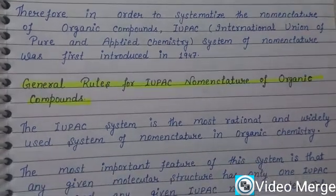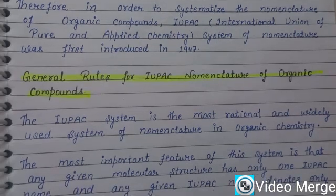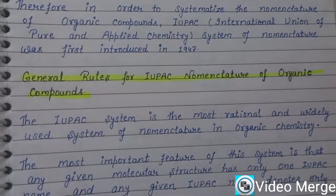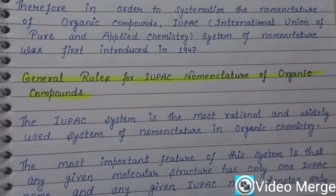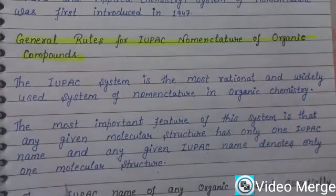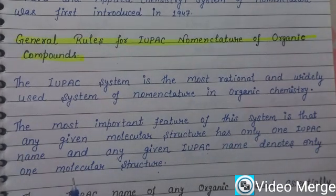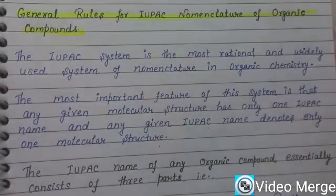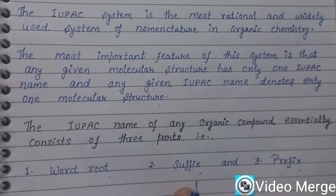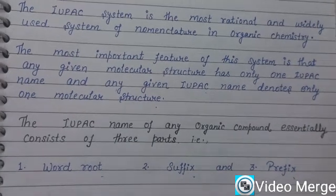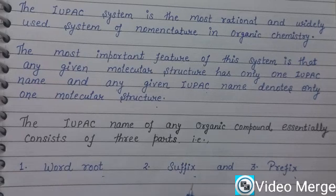One of the most important features of this system is that a given IUPAC name can give only one molecular structure, and a given molecular structure can have only one IUPAC name. The IUPAC name of any organic compound essentially consists of three parts: the first is the word root, the second is the suffix, and the third is the prefix.